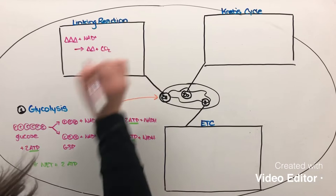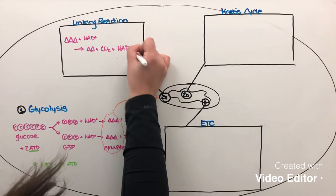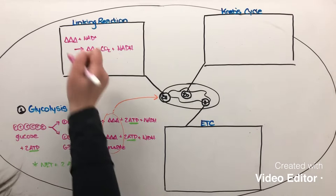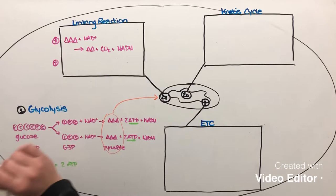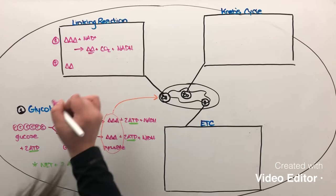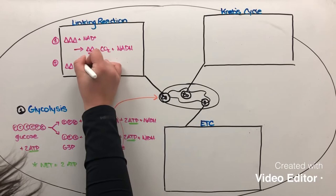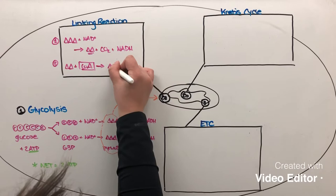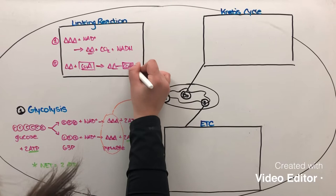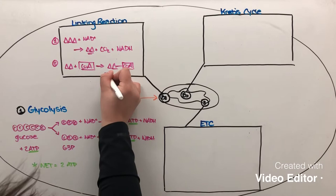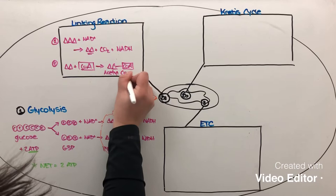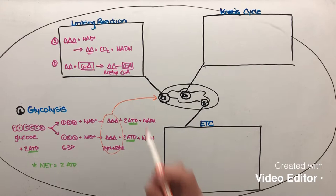The result of that reaction is a two-carbon compound, some carbon which joins with oxygen to produce CO2, and another NADH molecule which we will use later. The second part of the linking reaction takes the two-carbon compound and binds it to an enzyme called coenzyme A, or CoA for short. That is what produces the molecule called acetyl coenzyme A, which is the main product of the linking reaction and can actually enter the matrix to undergo the Krebs cycle.